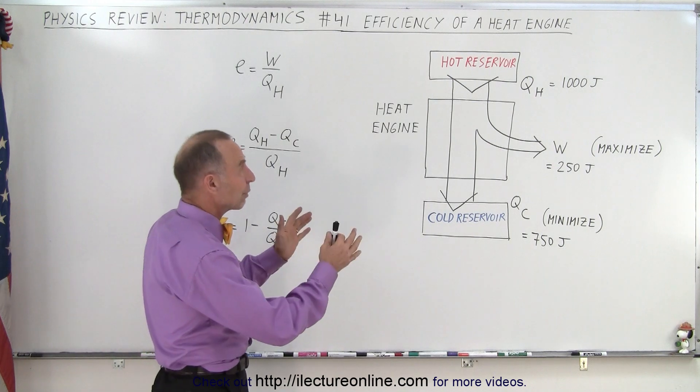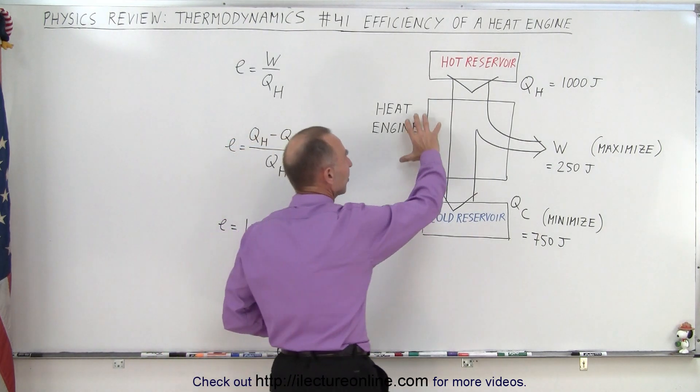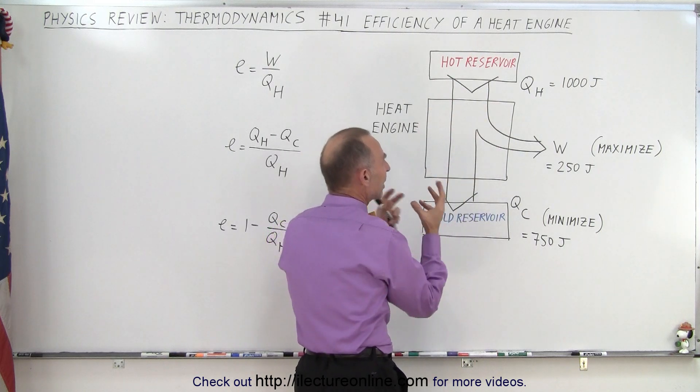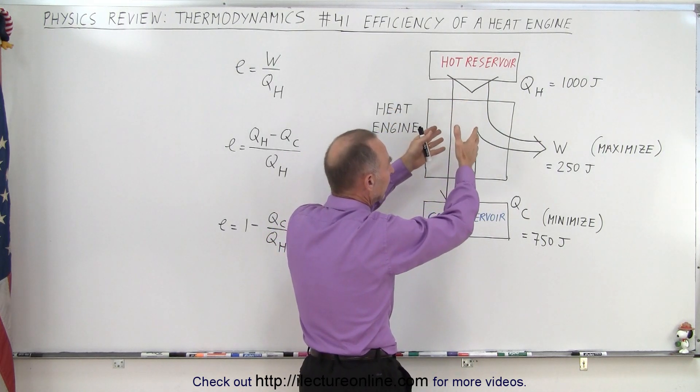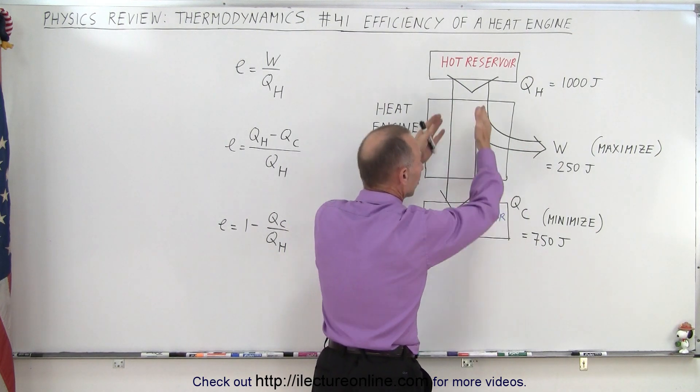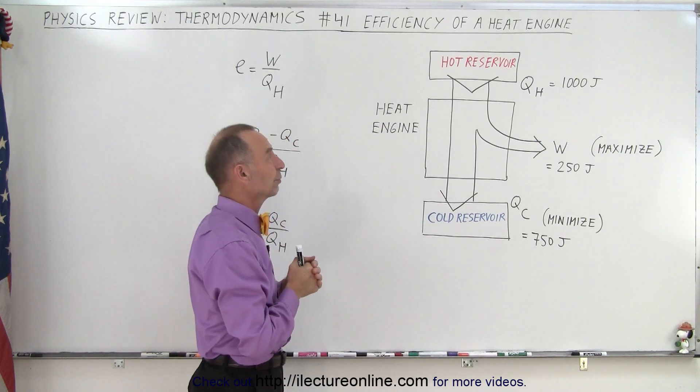But if you look at the diagram, it essentially tells everything. This box here represents a heat engine. The heat engine is capable of grabbing heat from a source, a hot reservoir, and utilizing some of the heat to do work and the remainder is then exhausted to the outside, essentially called the cold reservoir.